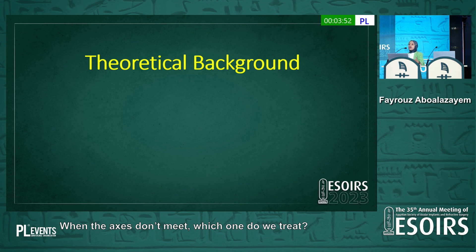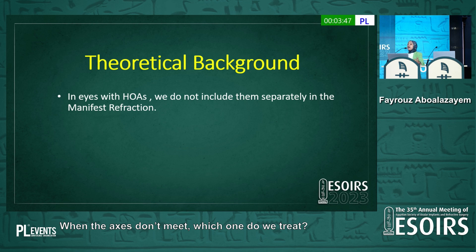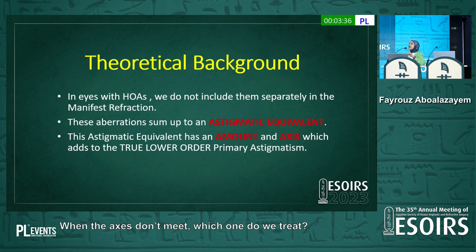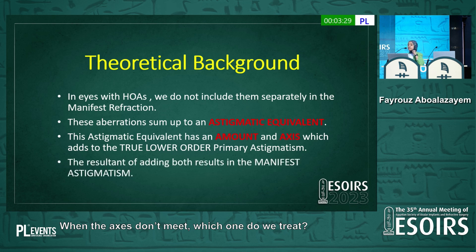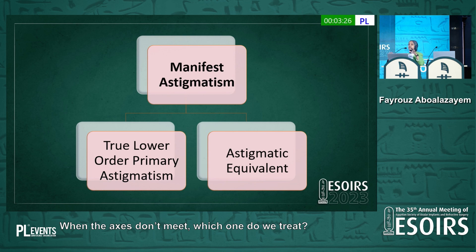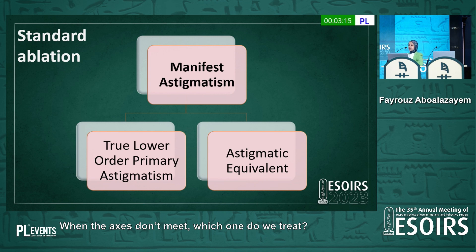To address this question, there is some theoretical background: in eyes with higher-order aberrations, we don't include them separately in the manifest refraction. The aberrations sum up to an astigmatic equivalent, and this astigmatic equivalent has its own amount and axis, which is different from the true lower-order primary astigmatism. So the manifest astigmatism is the sum of the true lower-order primary astigmatism and this astigmatic equivalent. If you're using standard ablation, you correct the manifest astigmatism.